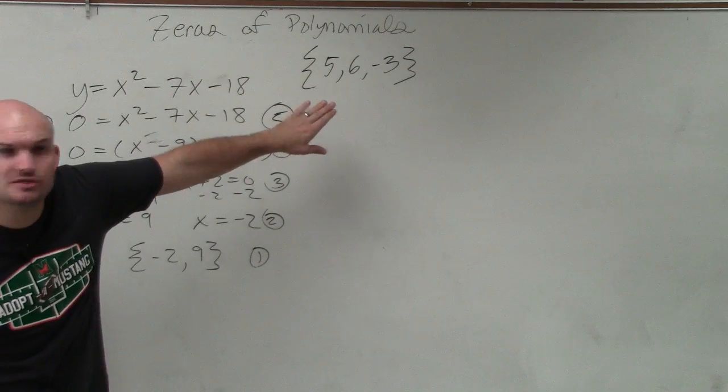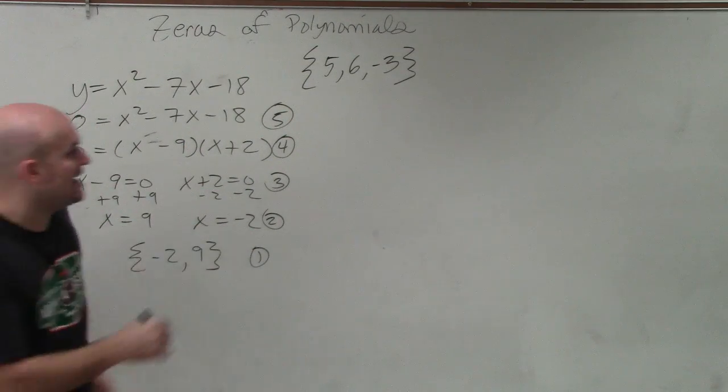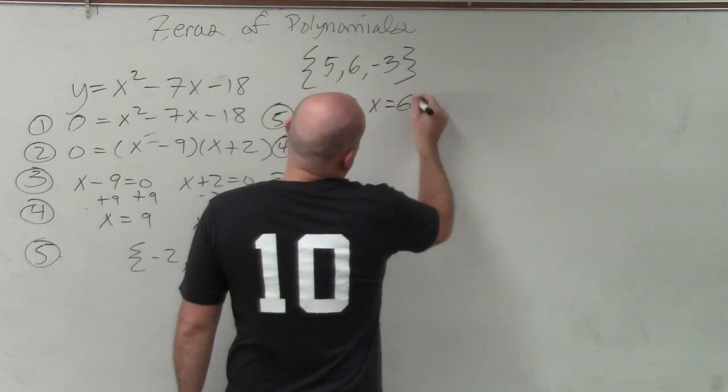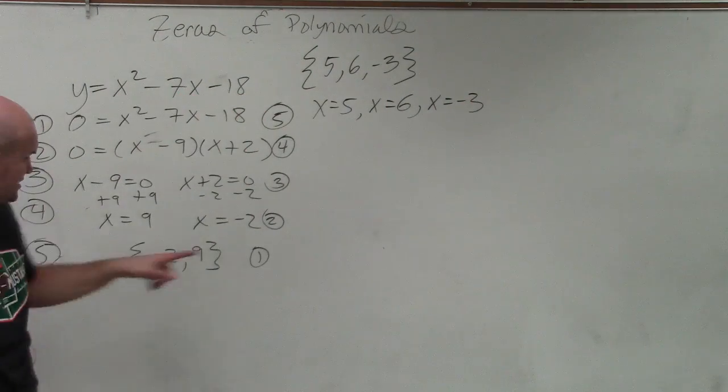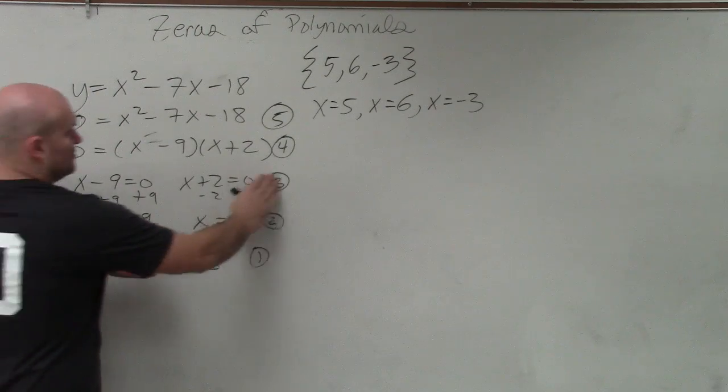So what do you do with your solution set? Take your solution set and set them equal to x. So I'd say x equals 5, x equals 6, and x equals negative 3. Does everybody understand what I did? I just went from step 1 to step 2. Does everybody see that? That's actually it.